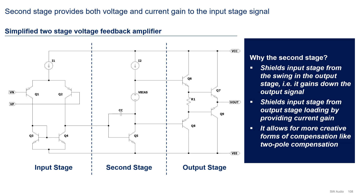Why do we need a second stage? The second stage accomplishes three things. First, by means of its voltage gain, it shields the input stage from the output swing. Second, by means of its current gain, it shields the input stage from the output load. And third, by means of the minor loop feedback, which will be described in the next slide, it allows for more sophisticated compensation methods like two-pole compensation. Note that the first two reasons refer to shielding the input stage. As we will find out later, a lot of the distortion mechanisms in audio amplifiers can be traced back to loading the input stage.